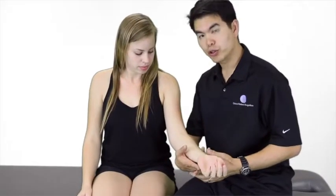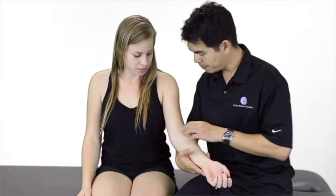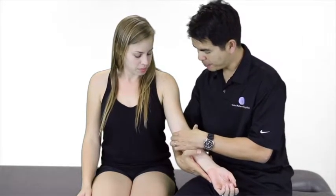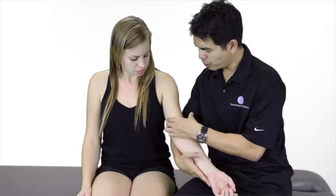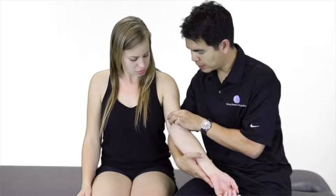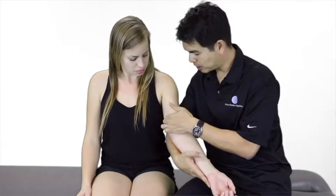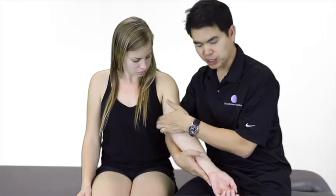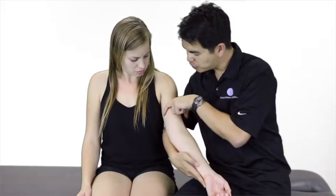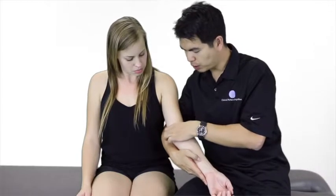We're looking at the ulnar nerve entrapment sites in the upper extremity. I always use the medial epicondyle to localize where I'm at, then move 8 centimeters north. Somewhere in here is the arcade of Struthers. I'm going to palpate and look for reproduction of the patient's symptoms, and I can visualize the nerve running deep into the cubital tunnel.